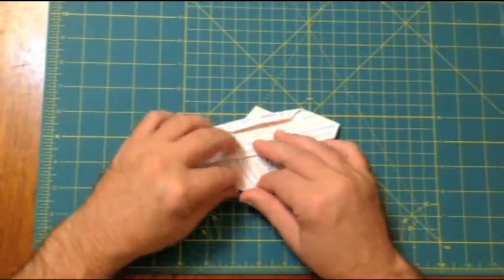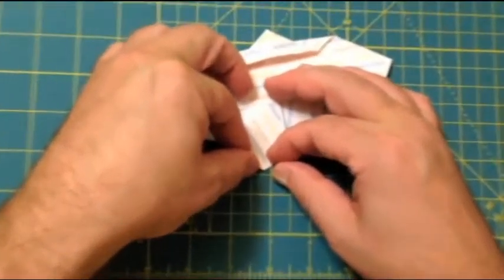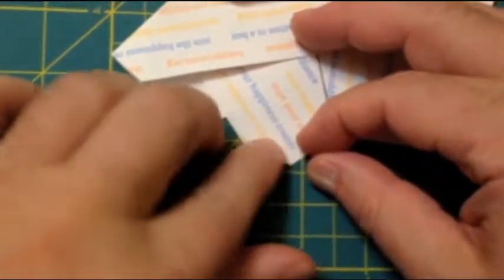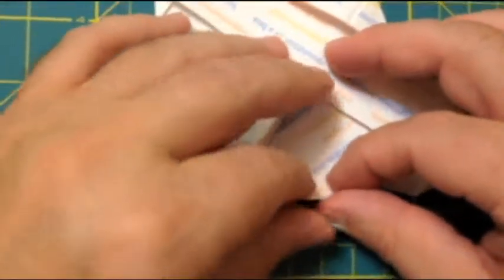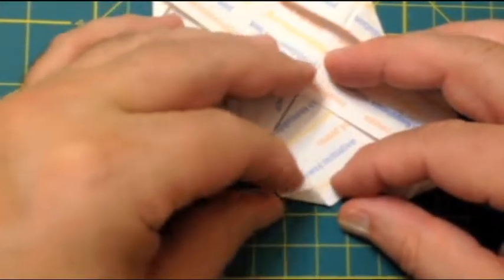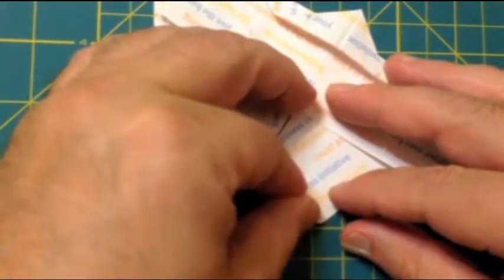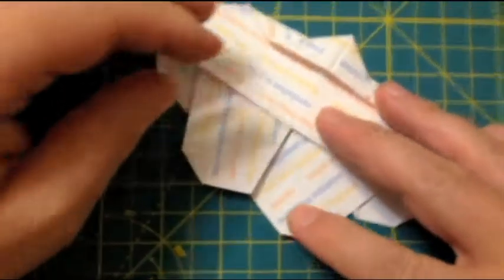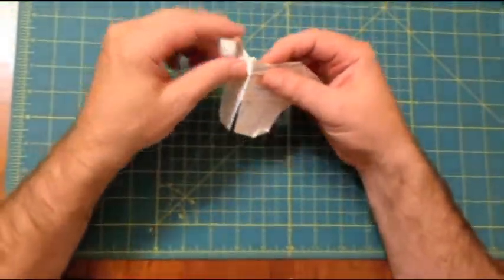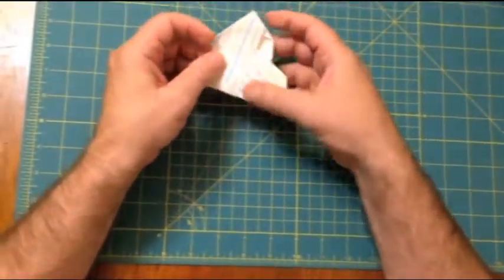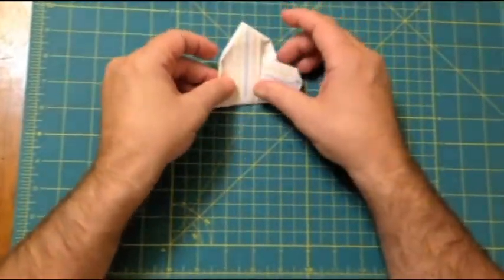Now we'll make a little tiny crease here. This is just to mimic the tail of the butterfly. And here. There we go. Now we fold it in half again. And now it's starting to look a bit more like a butterfly.